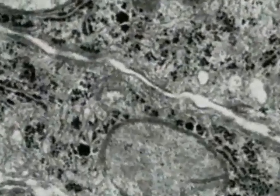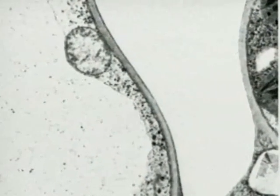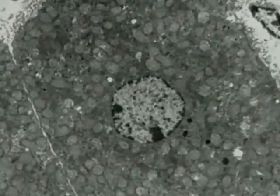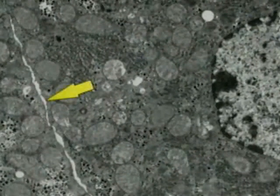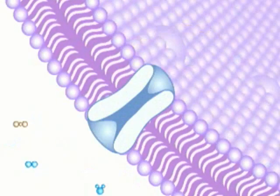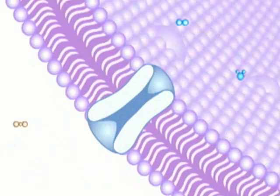One of the most important and complex structures of the cell is its outer boundary, known as the cell or plasma membrane. The cell membrane serves two main functions: it protects the internal parts of the cell, and it regulates which substances enter and exit. The cell membrane is selectively permeable, restricting the flow of traffic into and out of the cell to specific molecules. It, in essence, acts as a gatekeeper.